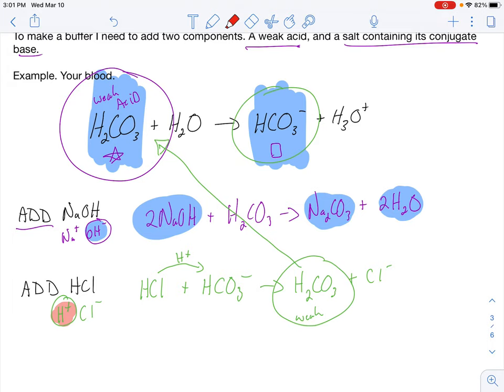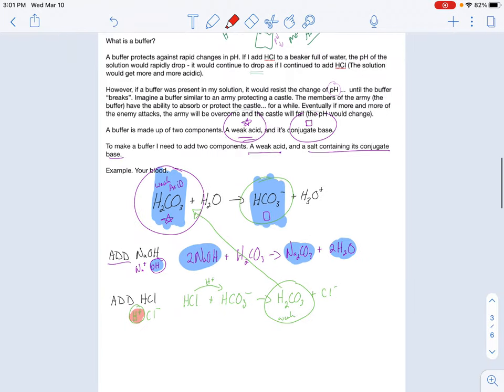I'll do another example in class, but that's the whole idea. So, there's two parts to a buffer, right? The weak acid and its conjugate base, and they're able to absorb either hydrogen ions or hydroxide ions, so the pH of the system does not change. All right. Hopefully, that made sense. See you out there.